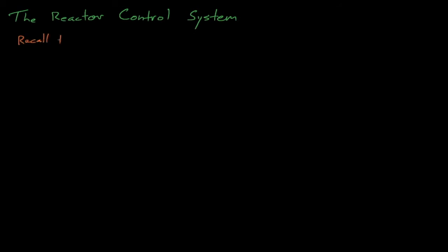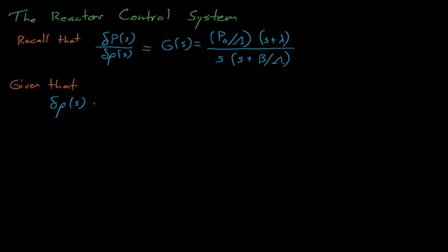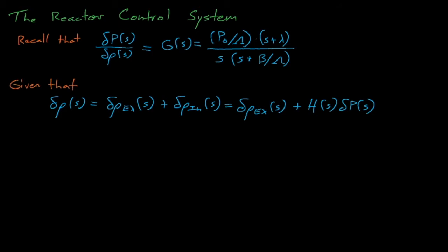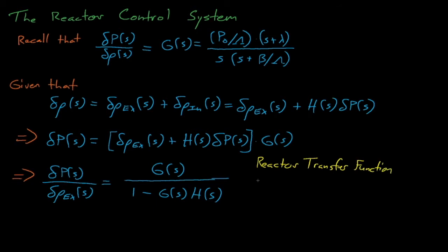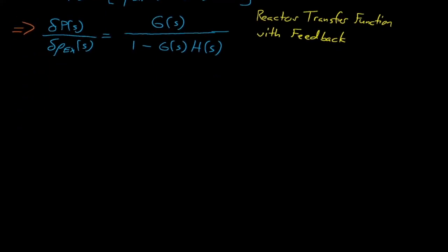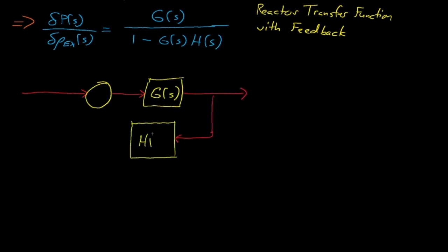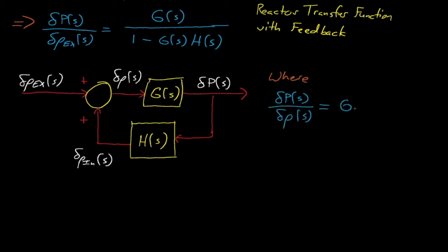From here we can rearrange the terms to show that the transfer function for the internal reactivity feedback with respect to a reactor's power is the Laplace transform of h. Recalling the reactor transfer function, we can replace the delta reactivity term with our expression for the internal and external reactivities, rearrange terms, and then we arrive at this expression for the delta power that occurs in response to some external reactivity effect. In essence, we have proved that our reactor behaves like a simple control system with feedback. Our feedforward element, g(s), is actually the reactor transfer function, and it multiplies some input external reactivity. The resulting delta power signal is then operated on by the feedback function, h(s), to integrate the internal reactivity effects into the overall reactivity.